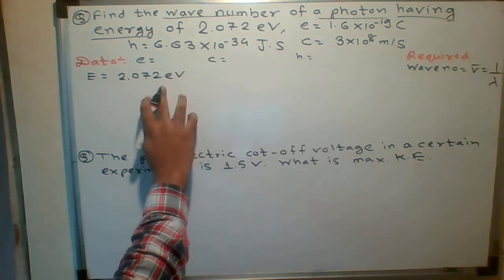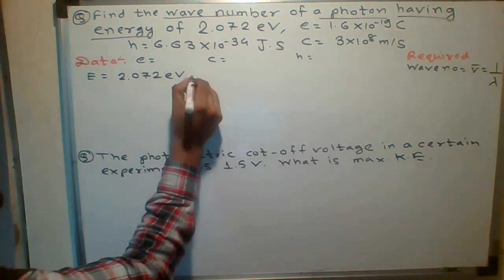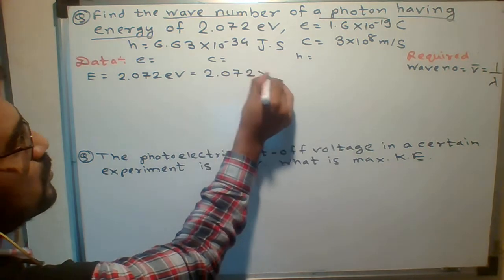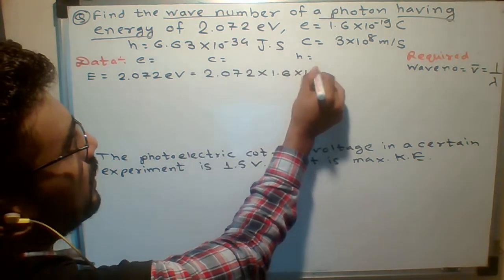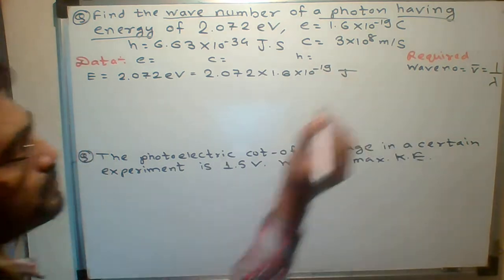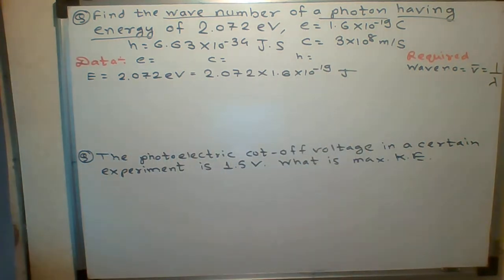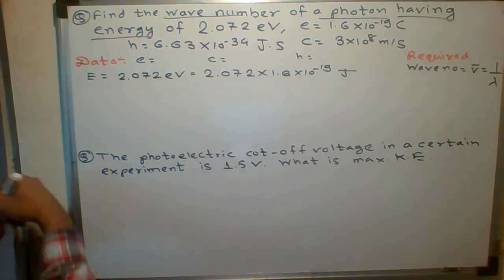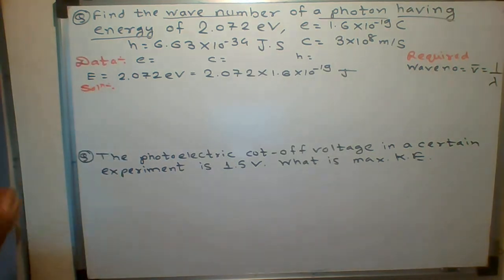Since energy is in electron volt, we can't calculate directly. We have to convert into joules. To convert electron volt into joule, we multiply by 1.6 × 10⁻¹⁹. Now let me start the solution using the formula for E.